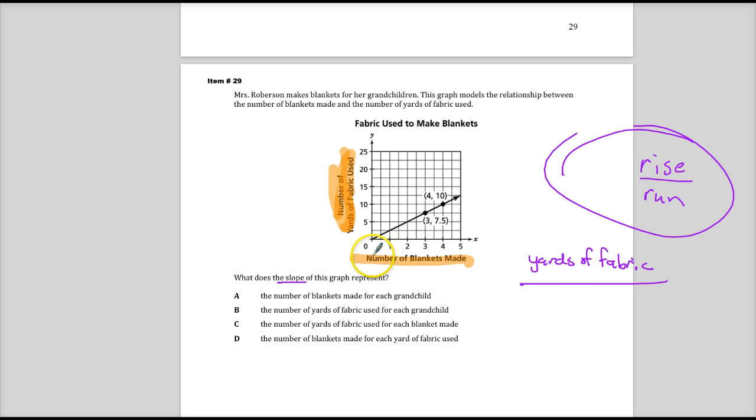And then I can just make a little adjustment based on the answer choices. So for the run, that'd be going over, blankets made. Without looking at any of the numbers, let's just see how much information that gives us for the problem.